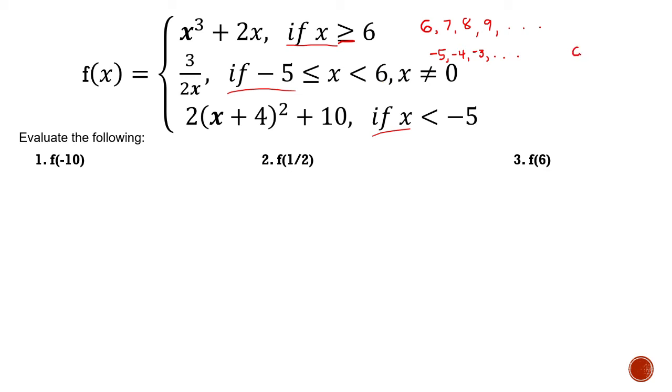So if 6 is here, 6 is not included, so we start with 5. Since x is less than 6, we start with 5. Why isn't 6 included? Because there's no equal sign. So less than 6: 5, 4, 3, 2. The numbers in this interval are the only ones that can be substituted in the second piece. Is negative 10 included there? No, it's not. So I think we're down to the last interval.